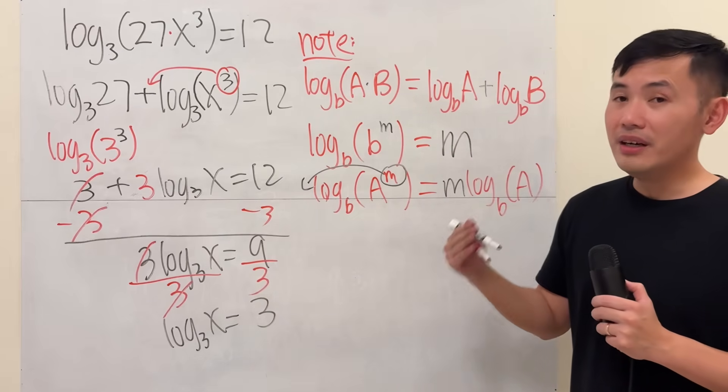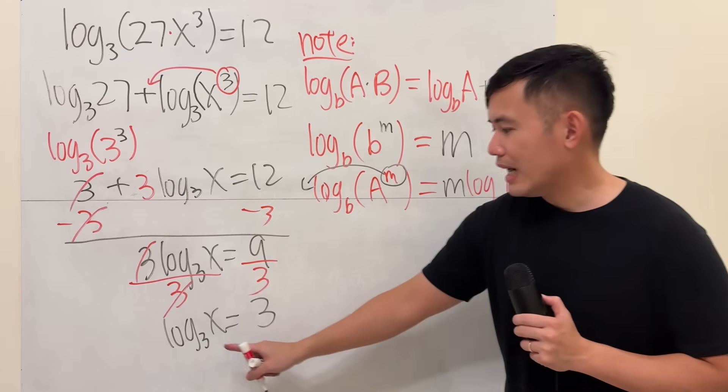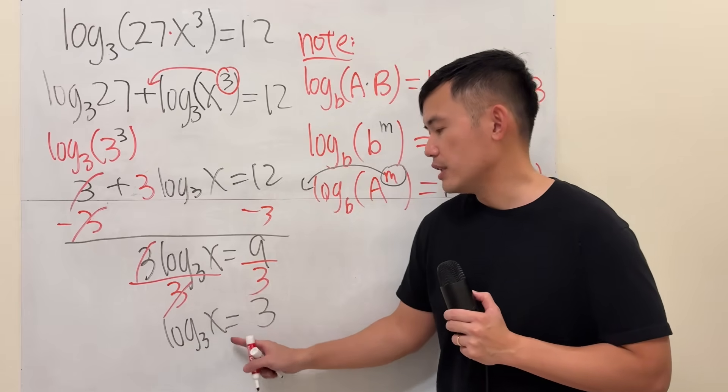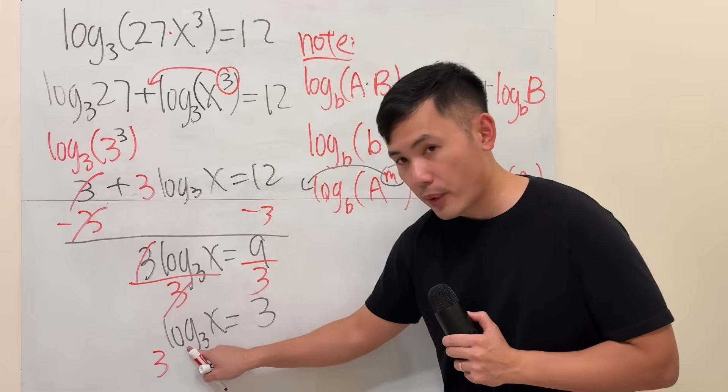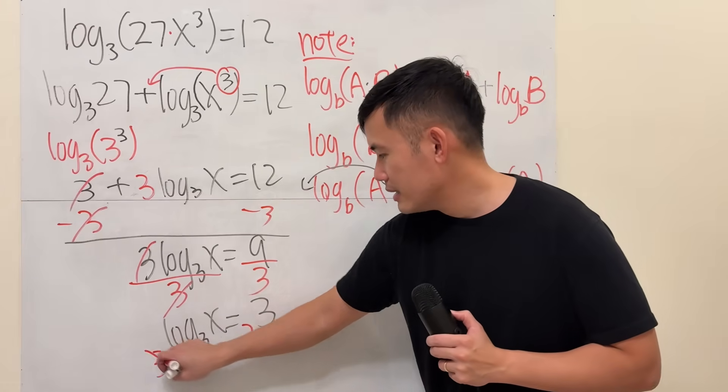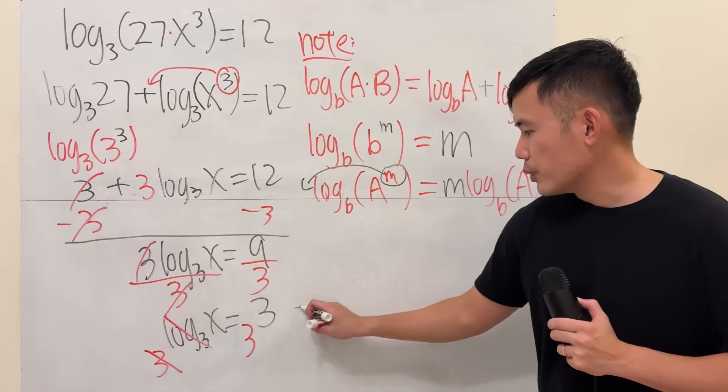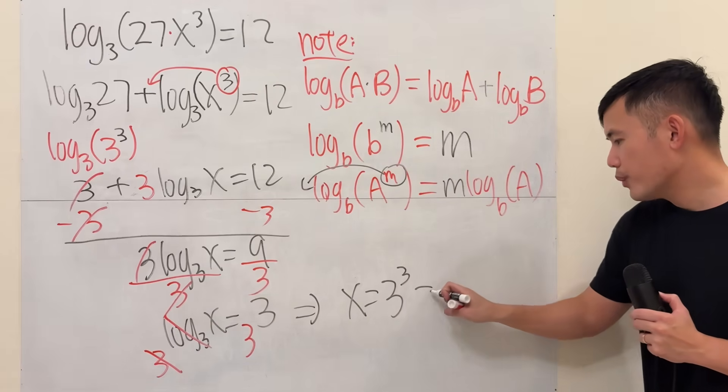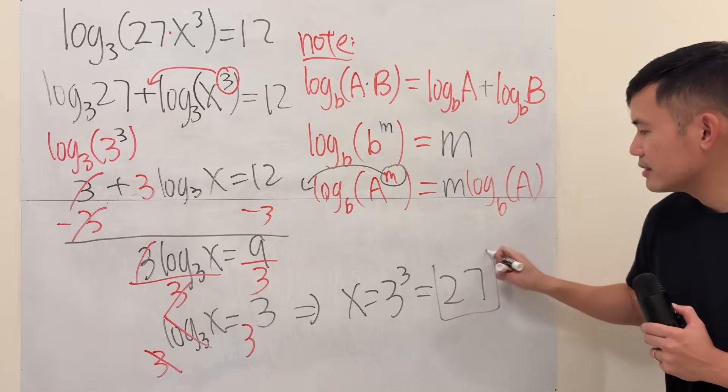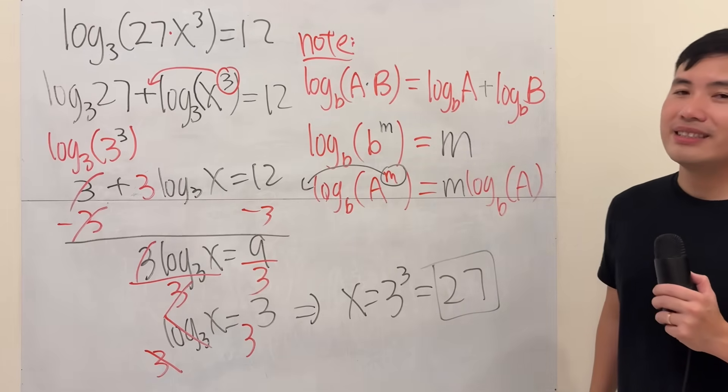Now finally, this is what we did earlier, right? Whenever we have log of a base of something is equal to a number, we do the same base here. So 3 to this power, and then we do 3 to that power. This way, this and that cancel. So we just get x equals 3 to the third power, which is 27. Just like that.